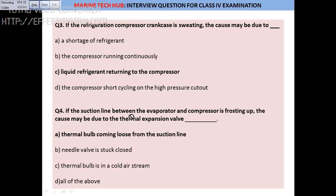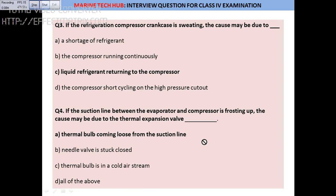Question 4: The suction line between the evaporator and the compressor is frosting up — what is the cause? Due to the thermal expansion valve, if there is frosting between these two components, the cause is the thermal bulb coming loose from the suction line. If the thermal bulb is loose and not sensing correctly, the expansion valve is not working properly, causing frosting on the line.